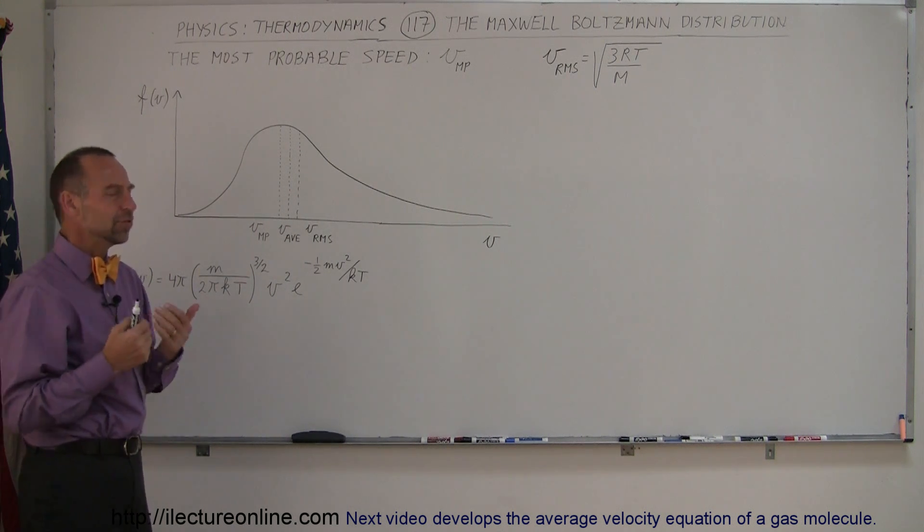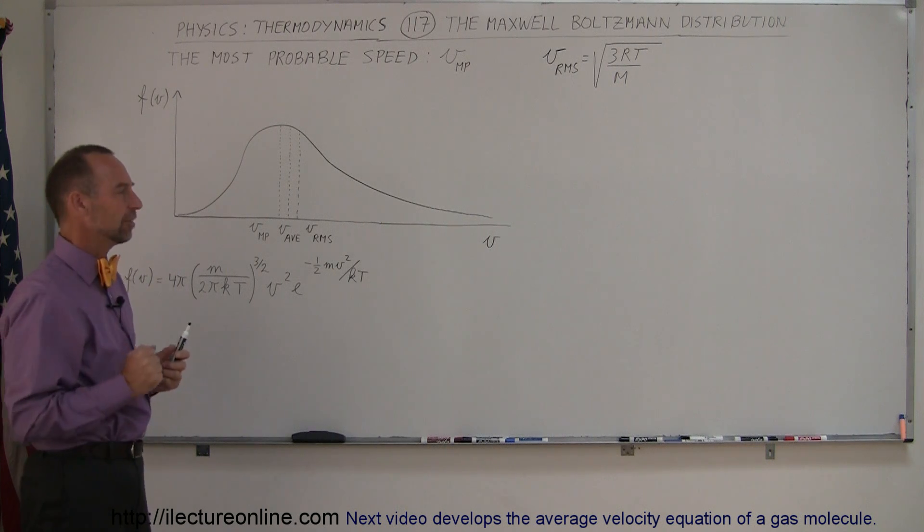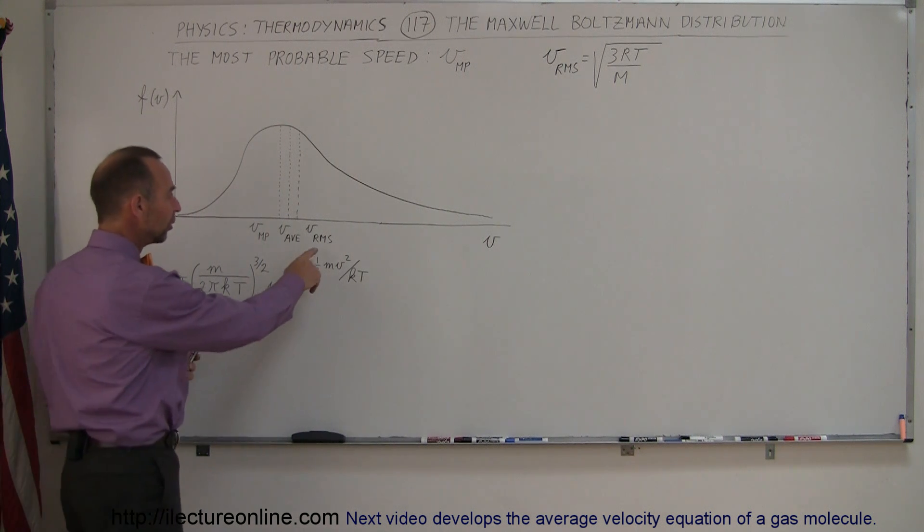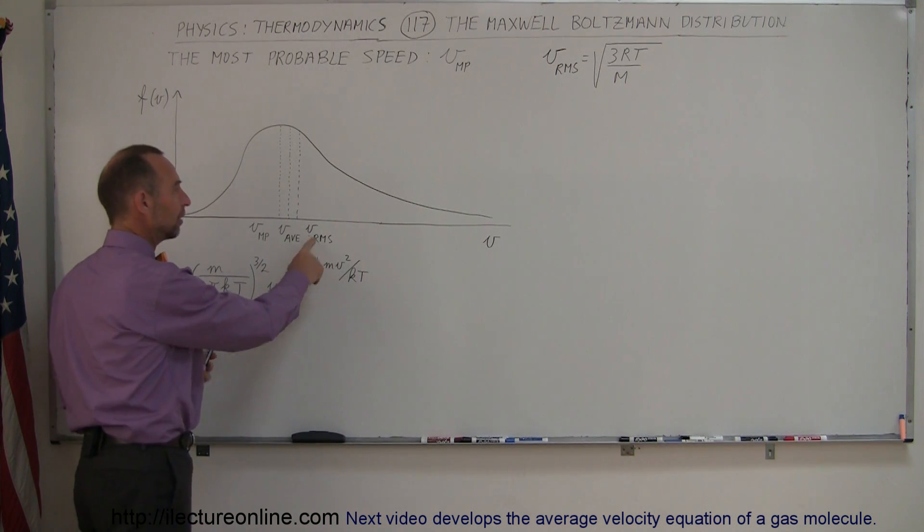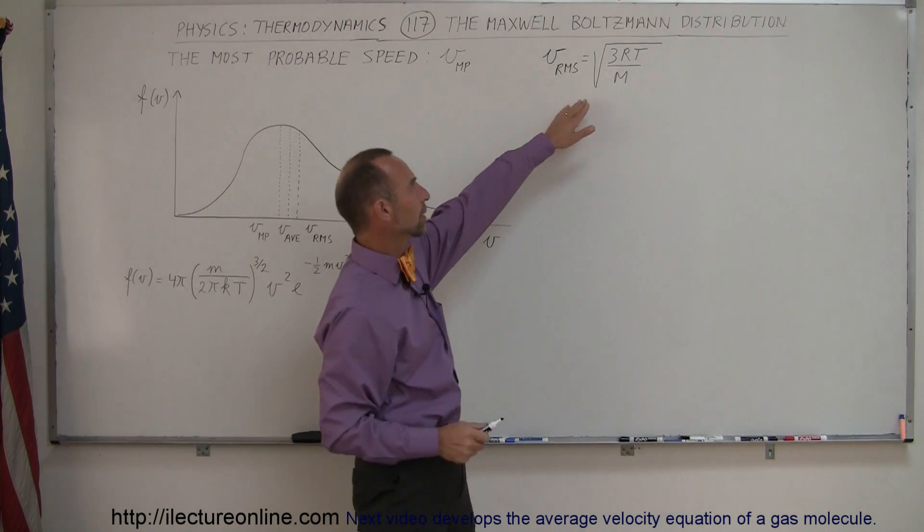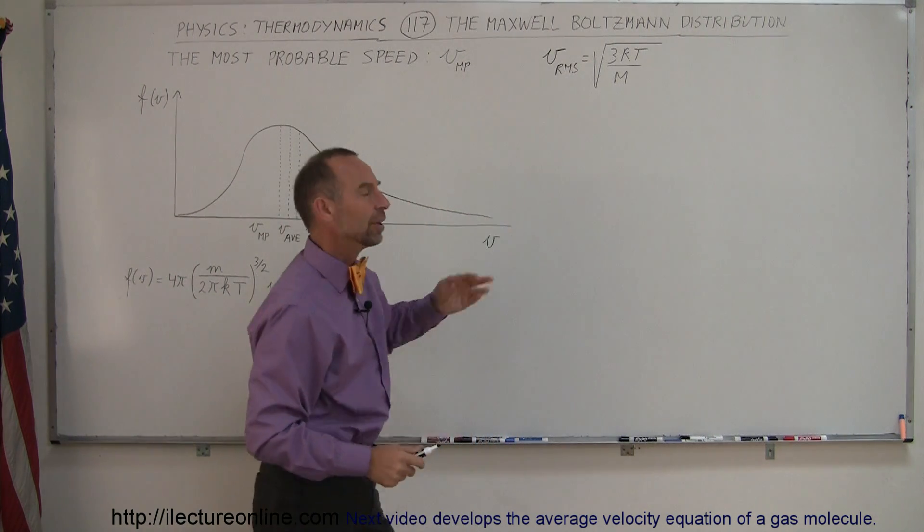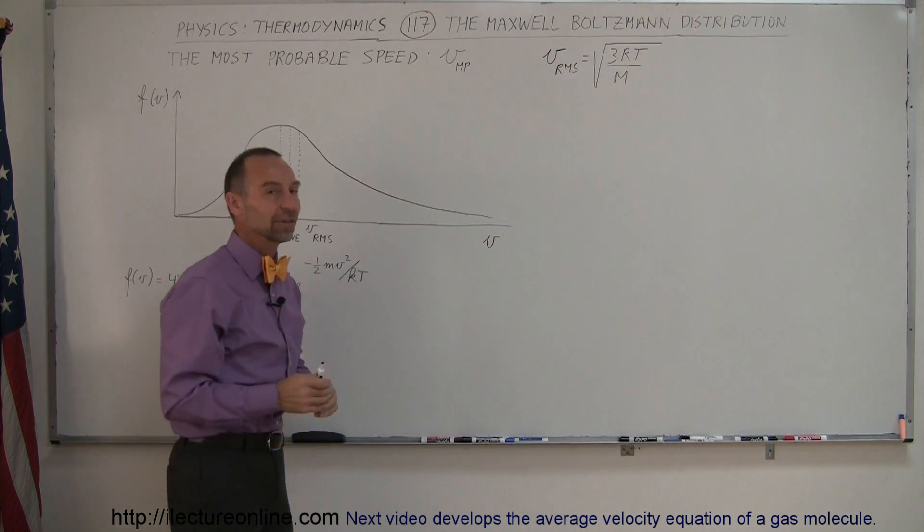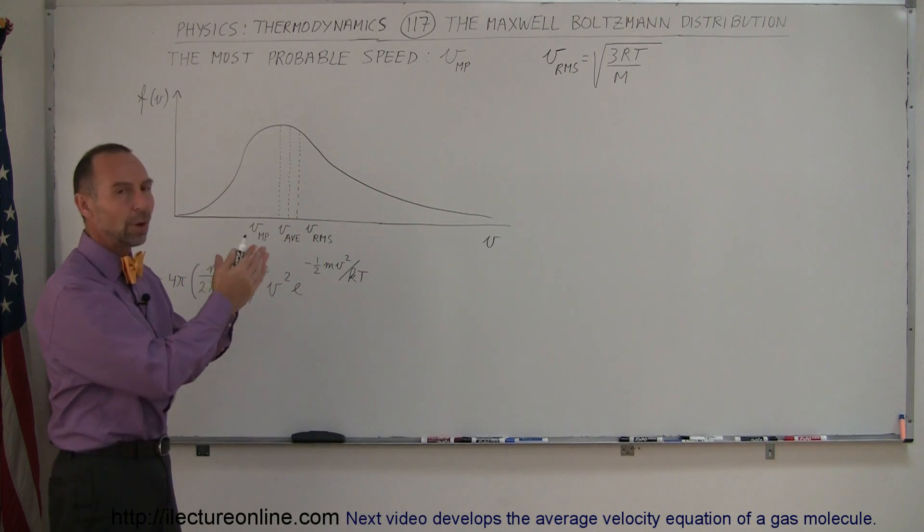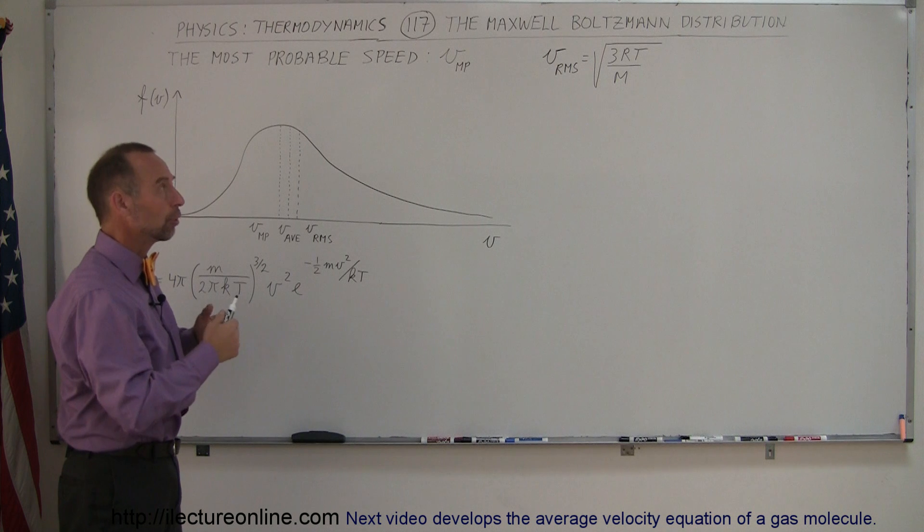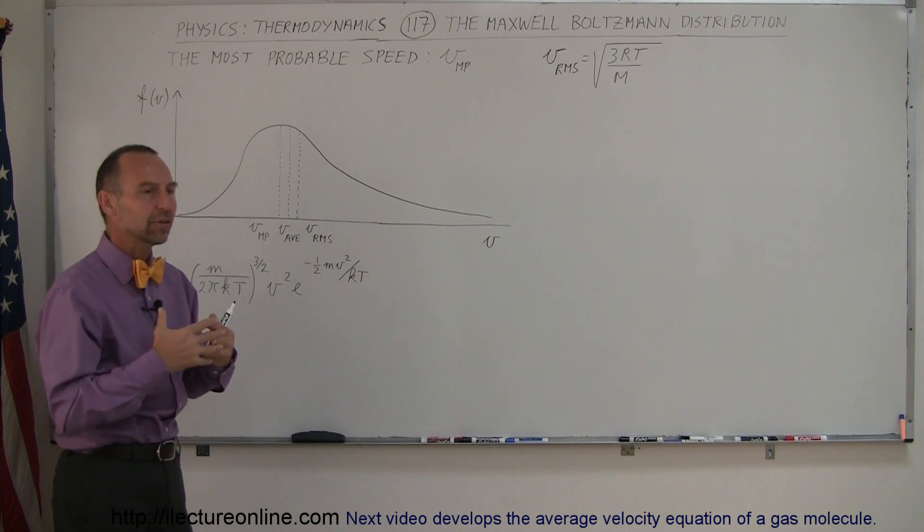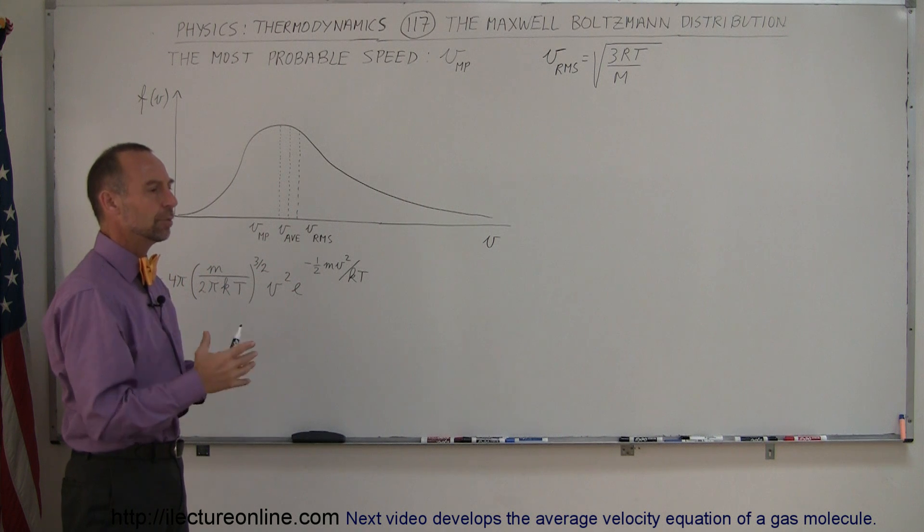But for our purpose we just need to understand three different velocities among the velocities of the molecules in a box or in the room. One is called the RMS or root mean square velocity and I put the equation up here already. We figured that out in a previous video so if you want to go look at that video to figure out how to find the RMS velocity there it is and how to use it. That's the one we typically use for most of our calculations because the RMS velocity is really the representative velocity of all the molecules in the box.